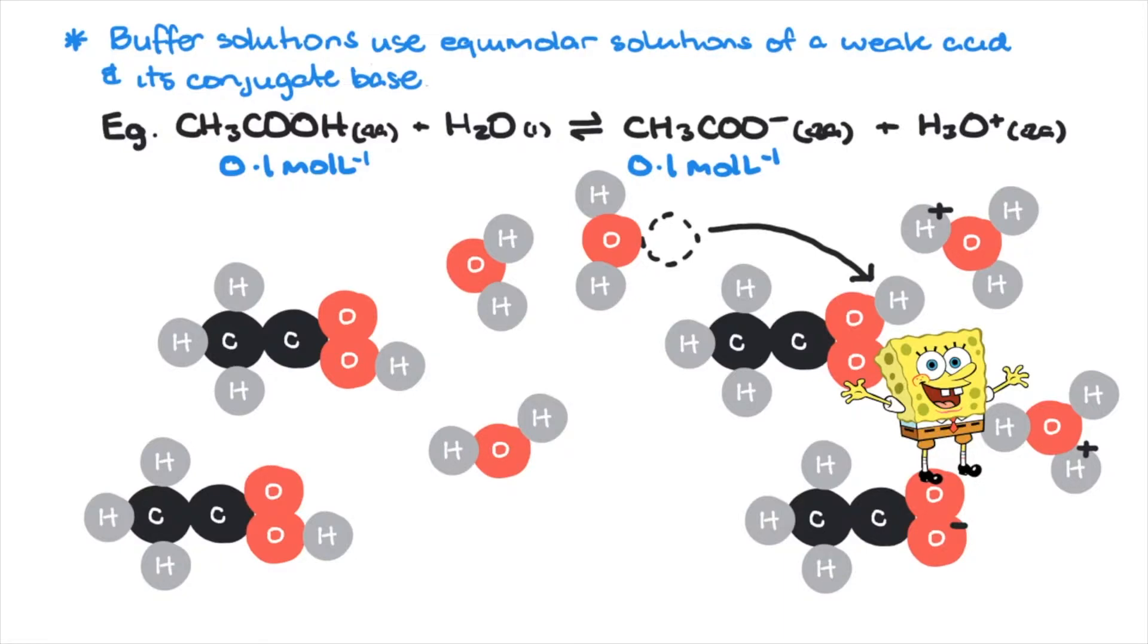But remember, this can only occur if there's enough acetate ions to form acetic acid. If there's none of these, this can't form. Which is why it's important that buffers contain roughly equal amounts of the weak acid and its conjugate base.